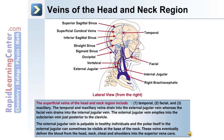The superficial veins of the head and neck include the temporal, the facial, and the maxillary. The temporal and maxillary veins drain into the external jugular, whereas the facial vein drains into the internal jugular vein. The external jugular vein empties into the subclavian vein just posterior to the clavicle. The external jugular vein is palpable in healthy individuals, and the pulse in the external jugular can sometimes be visible at the base of the neck. These veins eventually deliver the blood from the head, neck, chest, and shoulders into the superior vena cava.